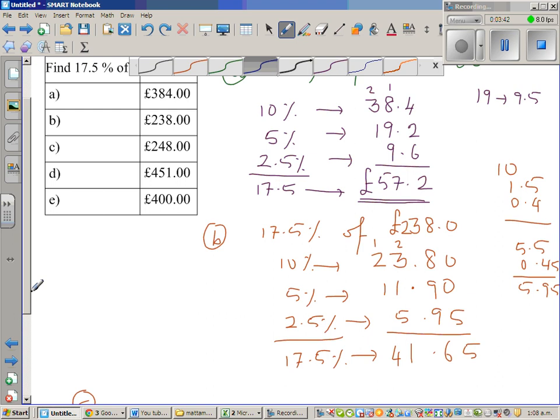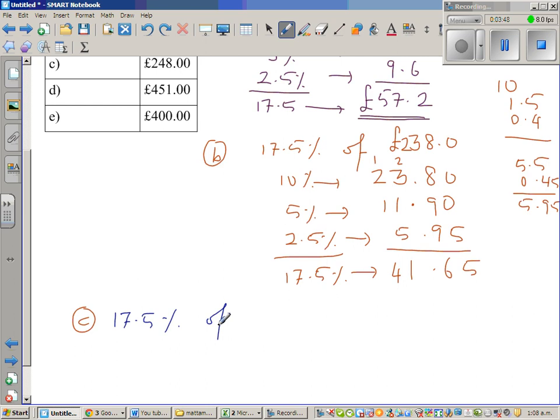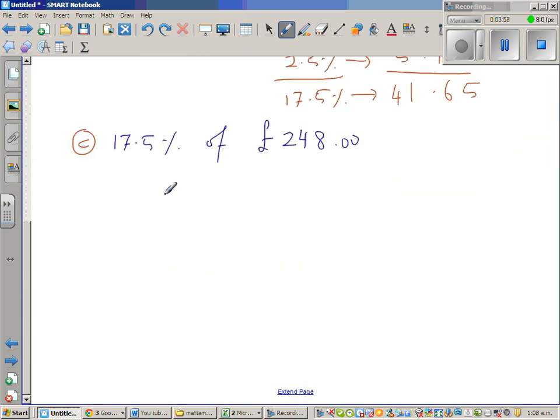So the third question is £248. So 17.5 percent of £248. So again the same strategy. You can use different strategies here, but I think this is a very good strategy for 17.5. So 10 percent is £24.8. So 5 percent is half of this, that is pretty easy. This is £12.40.